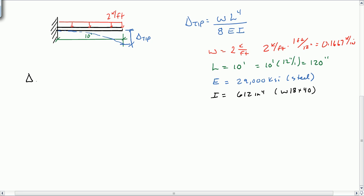The tip deflection is equal to 0.1667 kips per inch times 120 inches to the fourth. And again, we're only taking the 120 to the fourth power. Divided by 8 is a coefficient. Modulus elasticity is 29,000 ksi. And our moment of inertia is 612 inches to the fourth. And if we put this all in, we get 0.243 inches. So that tells us the tip of this beam will deflect 0.243 inches.